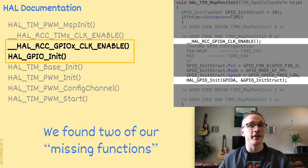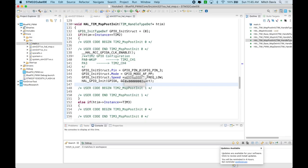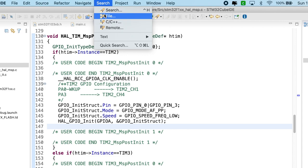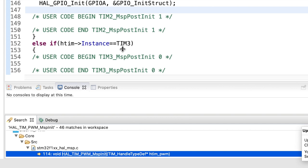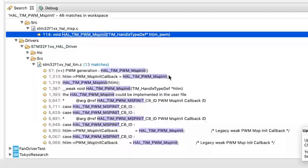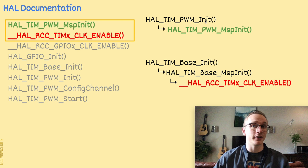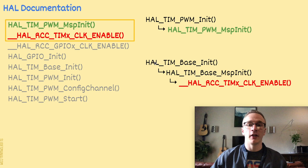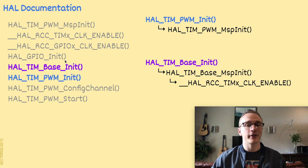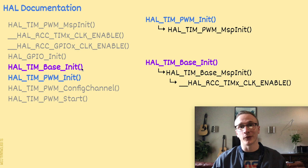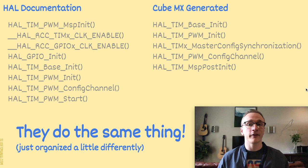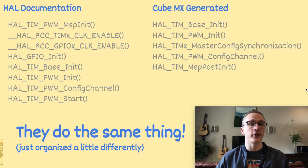I had to know: did those other two missing functions actually show up in the generated code, just buried a little bit deeper? I performed a search across all of the files in this project for those two functions and hunted through the results. Sure enough, I found both of them. HAL_TIM_PWM_MspInit is actually called from within HAL_TIM_PWM_Init, and HAL_RCC_TIM_ClockEnable is buried just one layer lower — HAL_TIM_Base_Init calls HAL_TIM_Base_MspInit, which then calls our function. The moral of the story is that the generated code is doing the same thing described in the HAL documentation — they just organize it a little differently. Now you know how to do it yourself by just reading the HAL documentation.